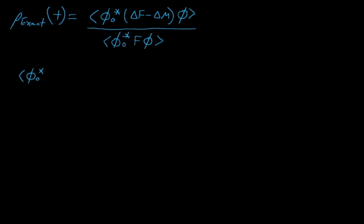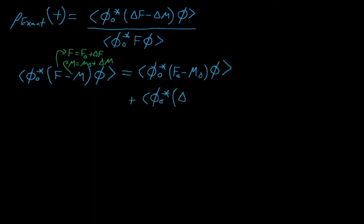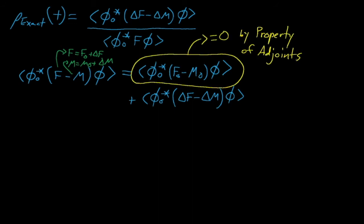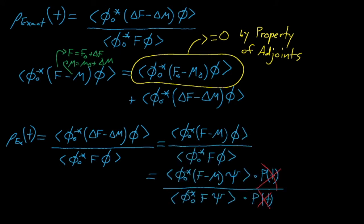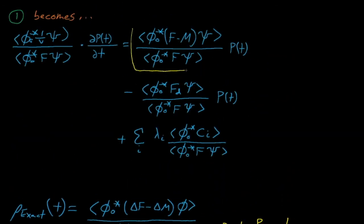We'll start by revisiting our old friend, the perturbation equation. If we replace f and m perturbed in this equation with f naught plus delta f and m naught plus delta m, we can expand this inner product into the combination of an unperturbed and delta inner product term. We can apply the property of adjoints to show that this first term is equal to 0. After separating out and canceling the power term from this ratio, this allows us to recast the perturbation equation to a form that equals the same bilinear ratio in our previous expression.